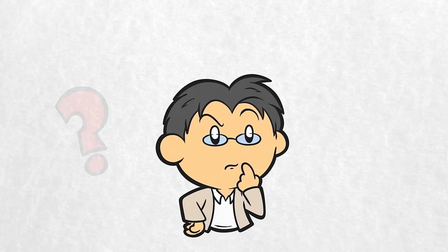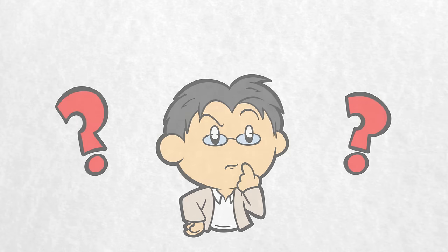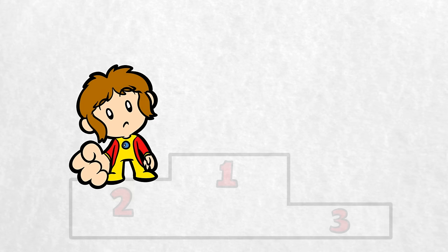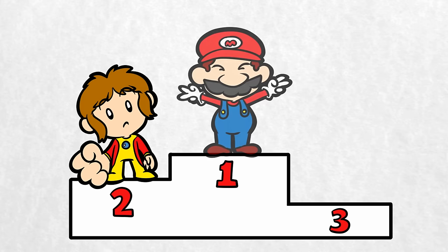Yuji Naka was stuck. The higher-ups at Sega had tasked him with replacing their old mascot. Alex Kidd was fun and had a dedicated following, but he just wasn't nearly as popular as Nintendo's mascot.